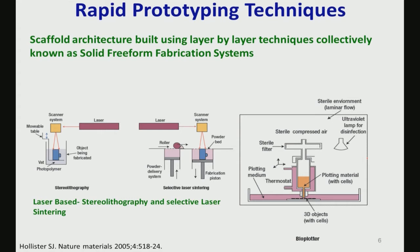Coming to rapid prototyping, the fundamental definition must include layer-by-layer deposition techniques. This is the generic description for any rapid prototyping technique, whether for scaffold fabrication for biomedical applications or for structural applications like dense non-porous components. Two techniques are mentioned: stereolithography, where a laser is focused via a scanner system to fabricate objects in a vat of photopolymeric solution layer by layer, and selective laser sintering.